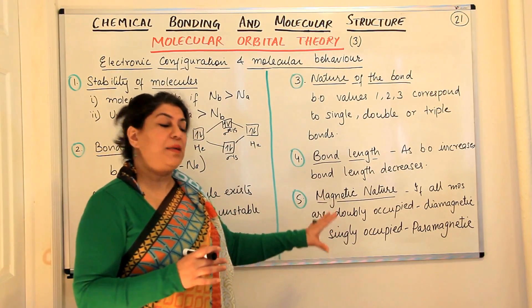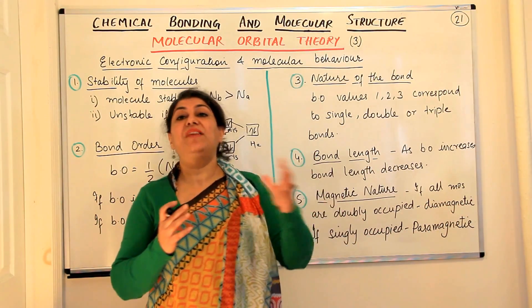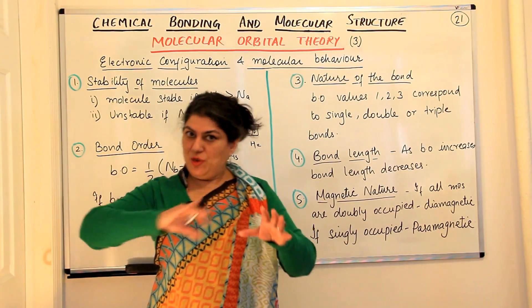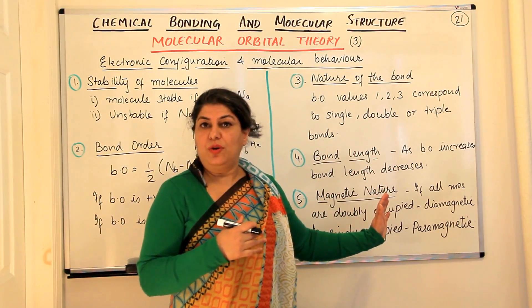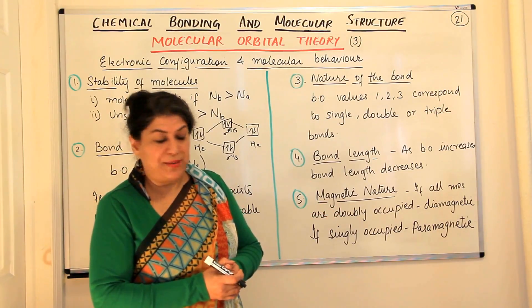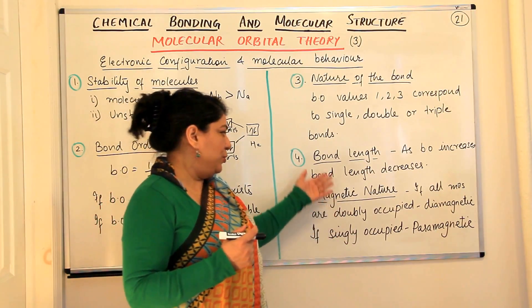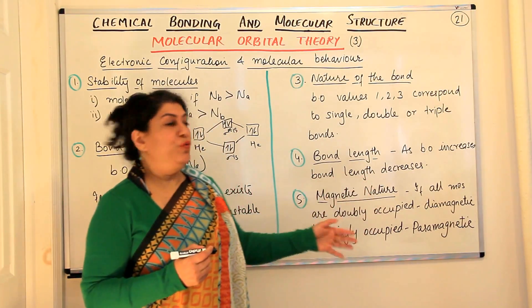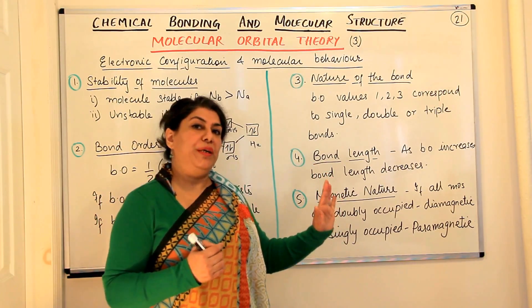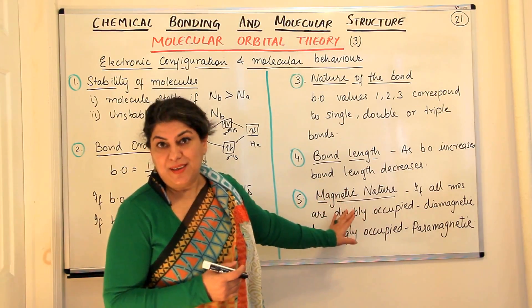Paramagnetic means a substance that behaves magnetically and is attracted to a magnet in the presence of a magnetic field, though it may return to being non-magnetic when the magnet is removed. When you actually work through the configurations and judge the properties, you find they are quite accurate — which gives an indication that molecular orbital theory is by far the best theory given by scientists.